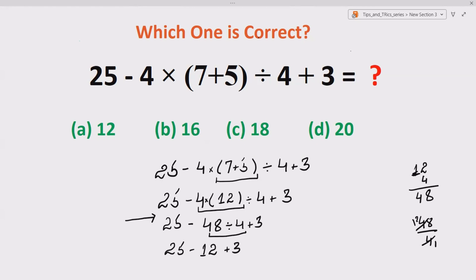Now 25 minus 12, so we have 25, we have 12, it gives us 13. So we have 13 plus 3 which is nothing but 16.